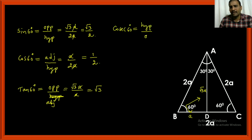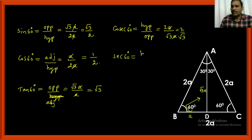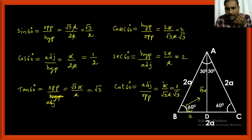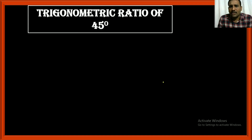Cosecant 60 is hypotenuse by opposite: 2a by √3·a = 2/√3. Secant 60 is hypotenuse by adjacent: 2a by a = 2. Cot 60 is adjacent by opposite: a by √3·a = 1/√3. In this way you can find all the values of sin, cos, tan, cosecant, secant, cot for 60 degrees. Now we will find the trigonometric ratios of 45 degrees.